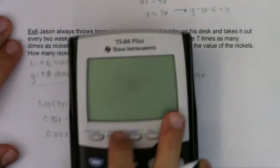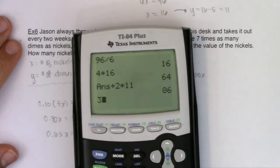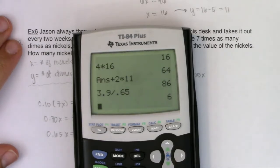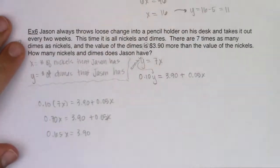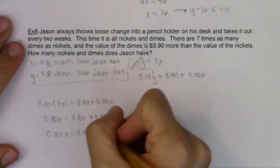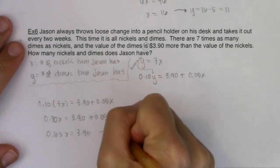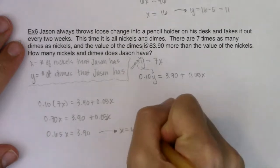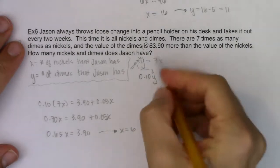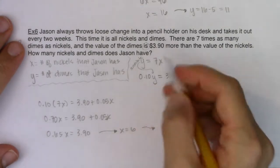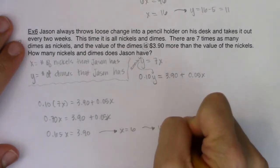Now I'm going to head over to my calculator. And let's take $3.90 and divide that by 0.65X. It looks like we had about 6 nickels. Alright, so this would tell me X was equal to 6. And then from there, I could say 7 times X is equal to Y. So Y would equal 7 times 6, which is 42.